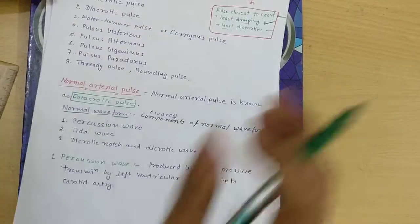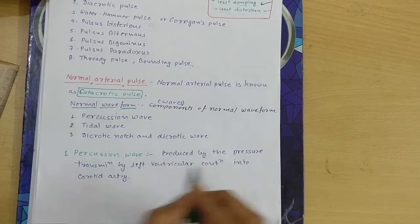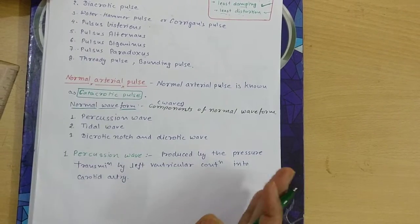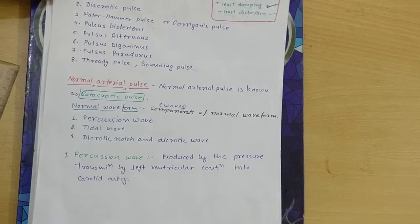How is it produced? Percussion wave is produced by pressure transmission by the left ventricular contraction into the carotid artery. This is how the percussion wave is produced.